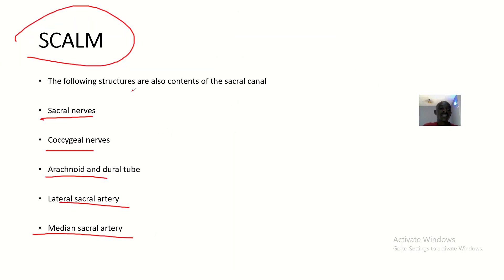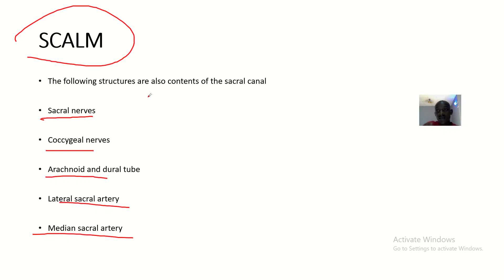Relating this mnemonic to the list: S stands for sacral nerves, C stands for coccygeal nerves, A stands for arachnoid and dural tube, L stands for lateral sacral artery, and M stands for median sacral artery.